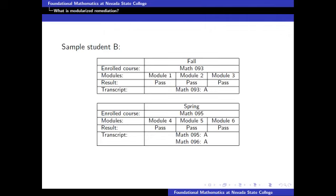Let's say that in the spring semester, she continues being successful and passes modules four, five, and six. In this case, she will receive an A for both math 95 and math 96. Furthermore, we've made arrangements with the financial aid department and the registrar that if a student is able to pass all six modules in two semesters, we would not charge them for math 96.